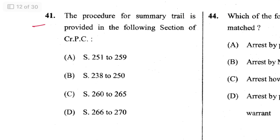Question 41: The procedure for summary trial is provided in which section of CrPC? Sections 262 to 265. C is the answer.